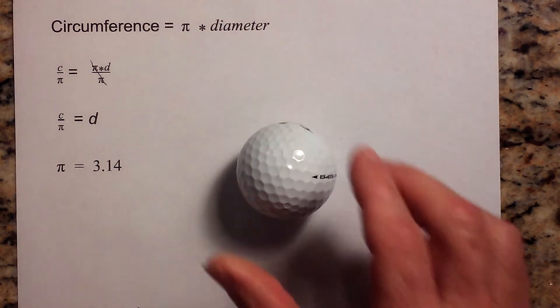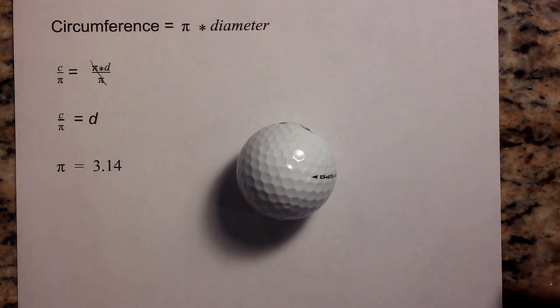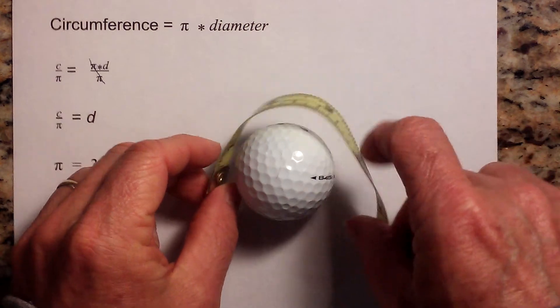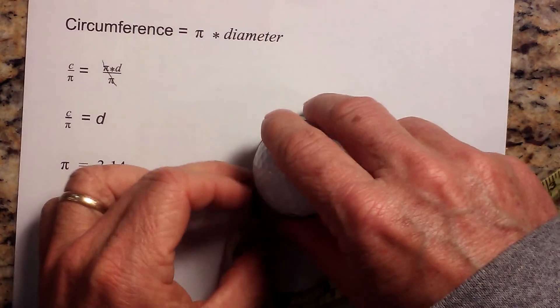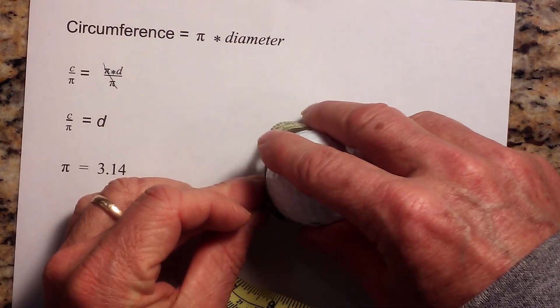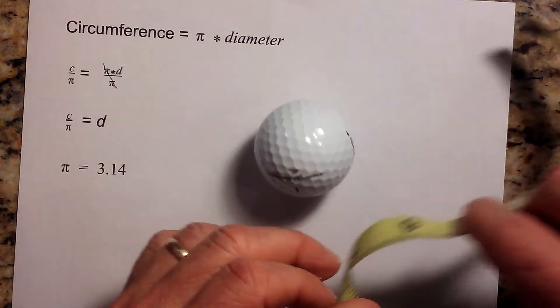In this example I'm going to use 3.14 for pi. So the first thing we need to do if I have this golf ball and I want to find the diameter or the distance across, I need to measure the circumference and I can do that using a tape measure and measuring all the way around.